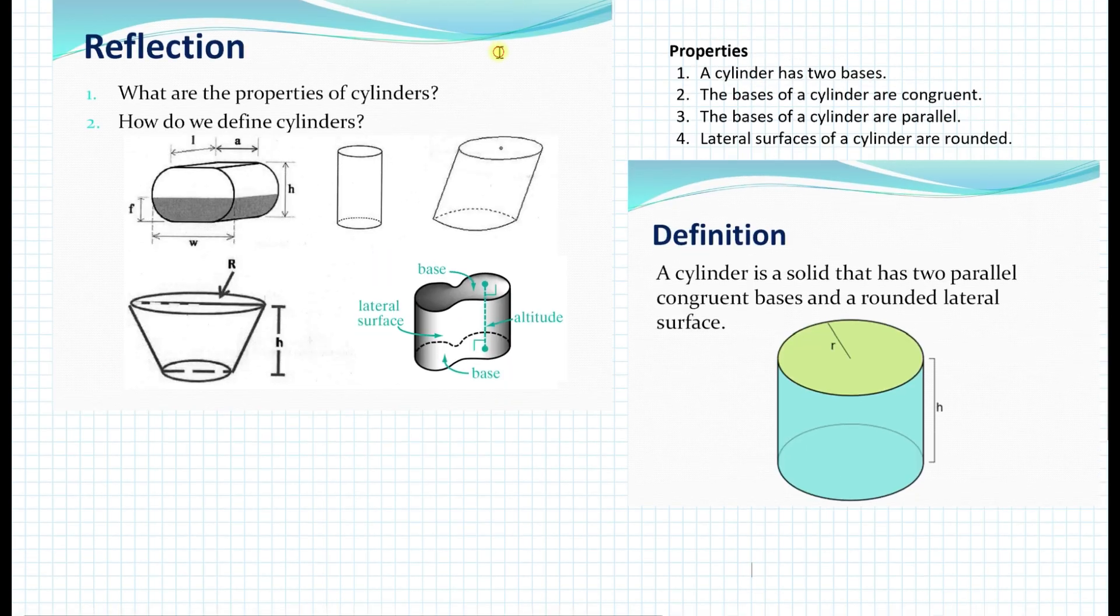A cylinder is a solid that has two parallel congruent bases and a rounded lateral surface. So if we look at these pictures, these cylinders here, what can you say about these cylinders or these shapes? Are they considered cylinders or not? For example, let's look at A. Is A a cylinder? So here it seems that the surfaces are rounded, but here we have an edge over here. So unfortunately, that is not a cylinder.